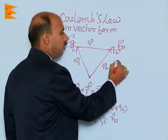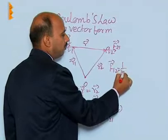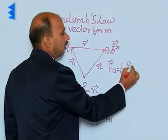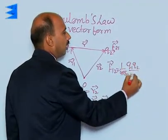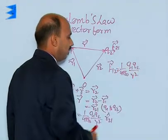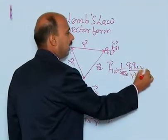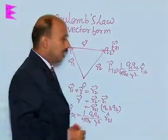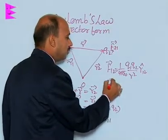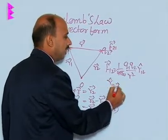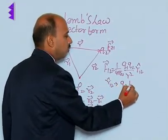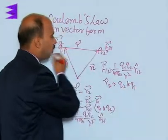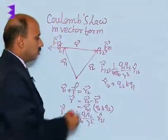We can write R12 unit vector. R12 unit vector means direction is from Q2 to Q1, from this to this side.